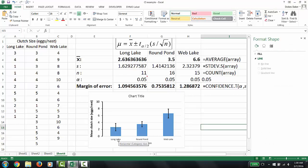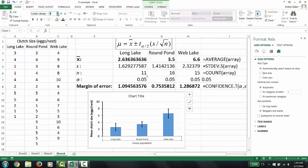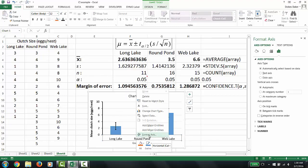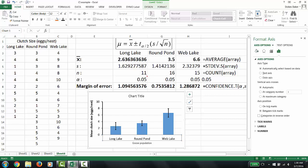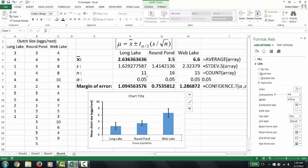On the x-axis, same thing. Make it a larger font and right click, format axis, the bucket, solid line, black, and one point.